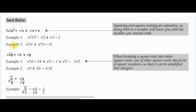Here are the three rules for surds. First of all, if you square root something and then square it, you're going to end up with the number you started with. So if you have an x, you square root and square it, you end up with x again. This is just another way of saying that. If you square root 3 and then square it, you're going to get 3. Root 3 times root 3 is just another way of saying root 3 squared. So root 10 times root 10 equals 10, based on that same principle.